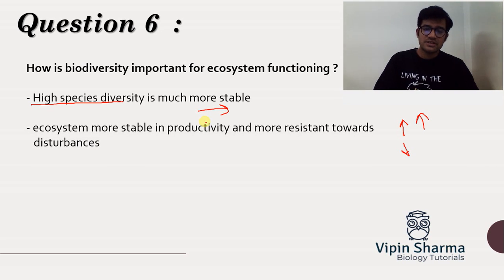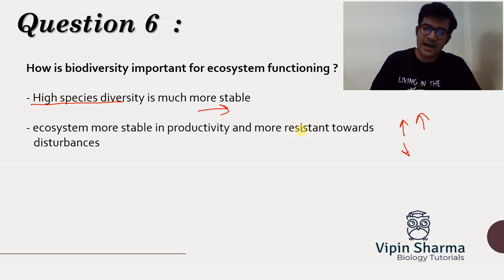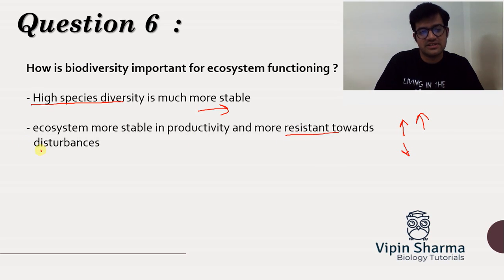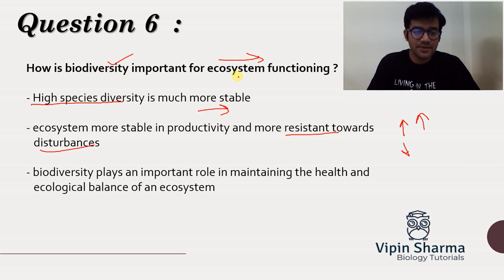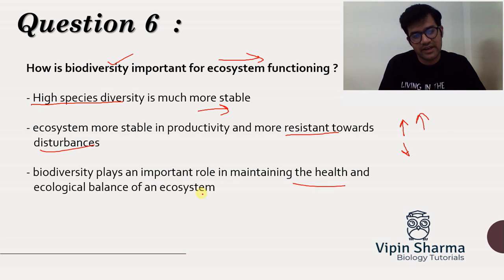The second point is: if biodiversity levels are high, that means the productivity of that ecosystem is high, the biomass contained in that ecosystem is high, and due to this it is able to resist any kind of disturbances. So this way biodiversity is directly impacting the ecosystem functioning.